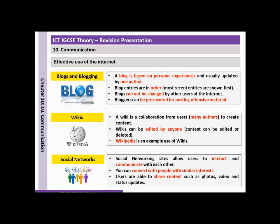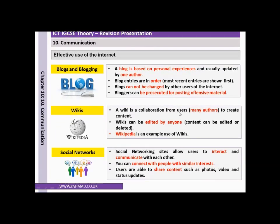A blog is based on personal experiences and usually updated by one author. Blog entries are in order, with the most recent entries shown first. Blogs cannot be changed by other users of the internet, and bloggers can be prosecuted for posting offensive material in certain countries. A wiki — an example being Wikipedia — is a collaboration of many authors to create content. Wikis can be edited or deleted by anyone.